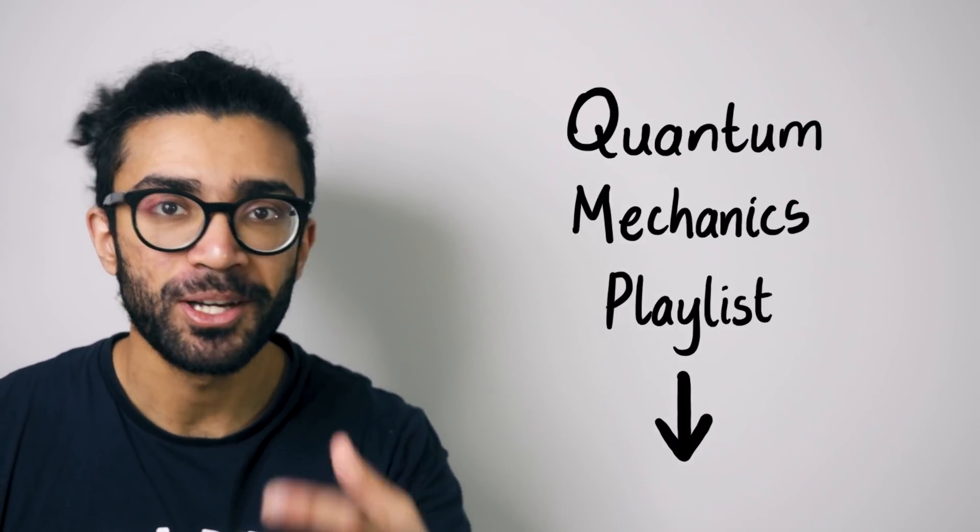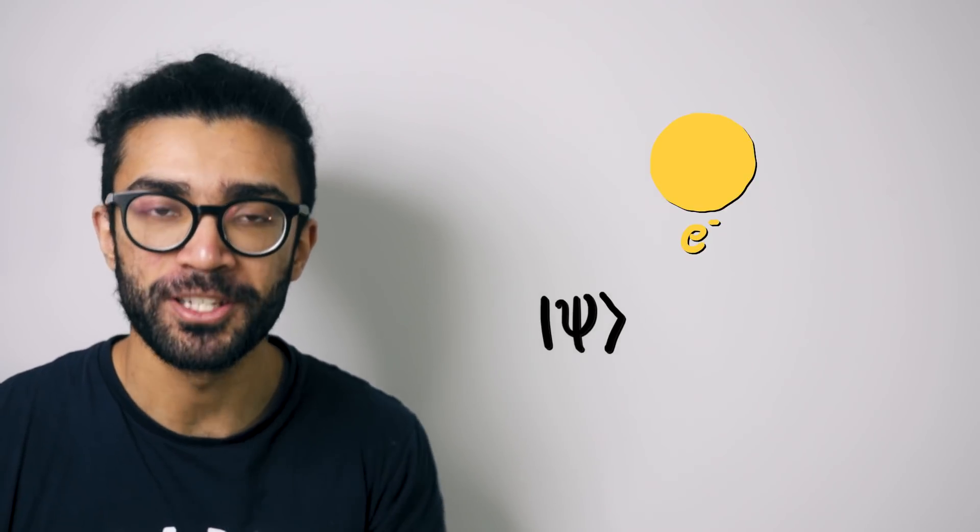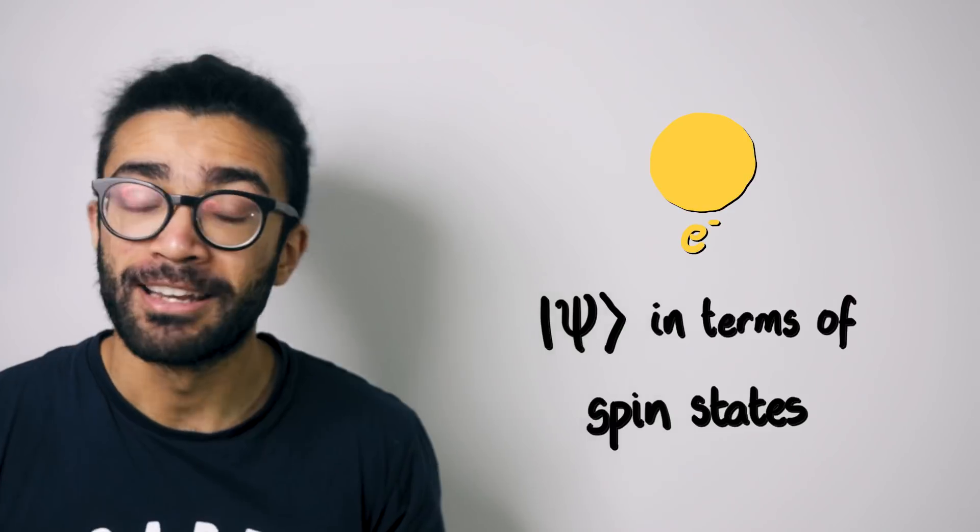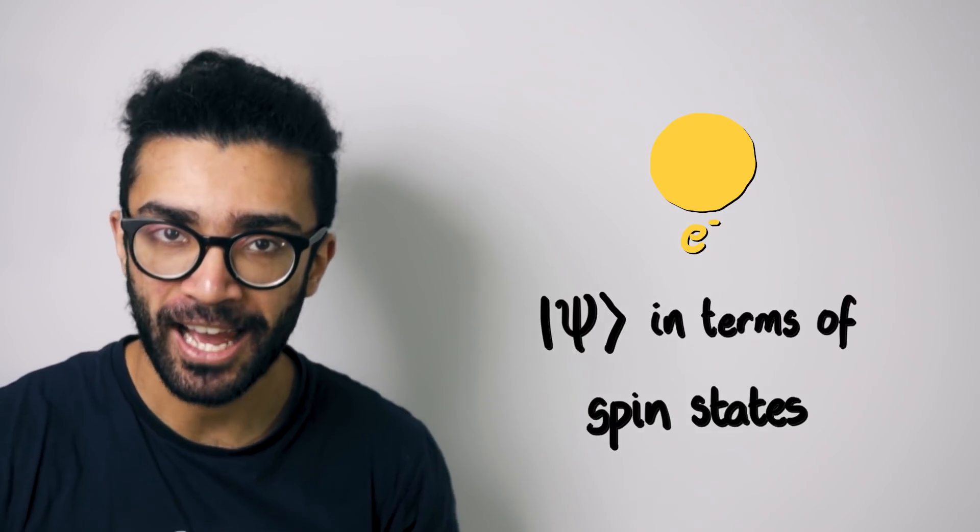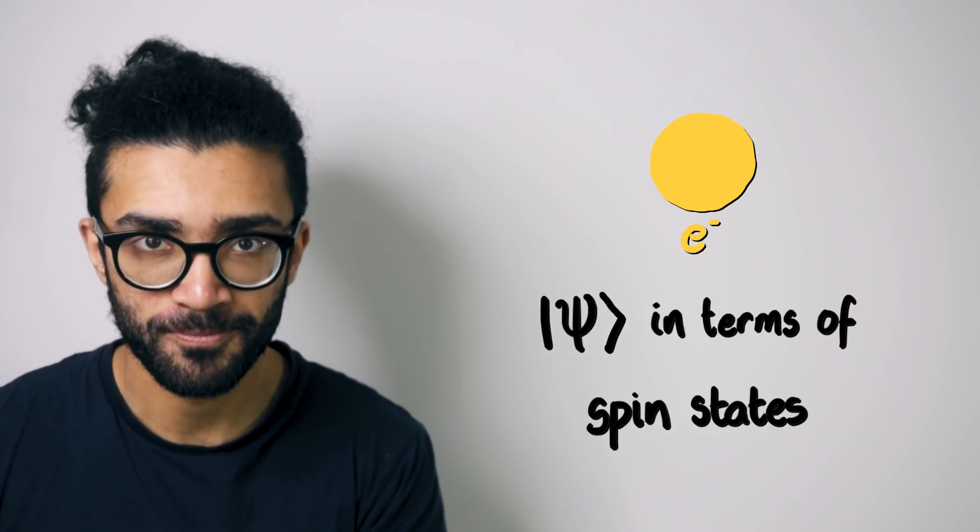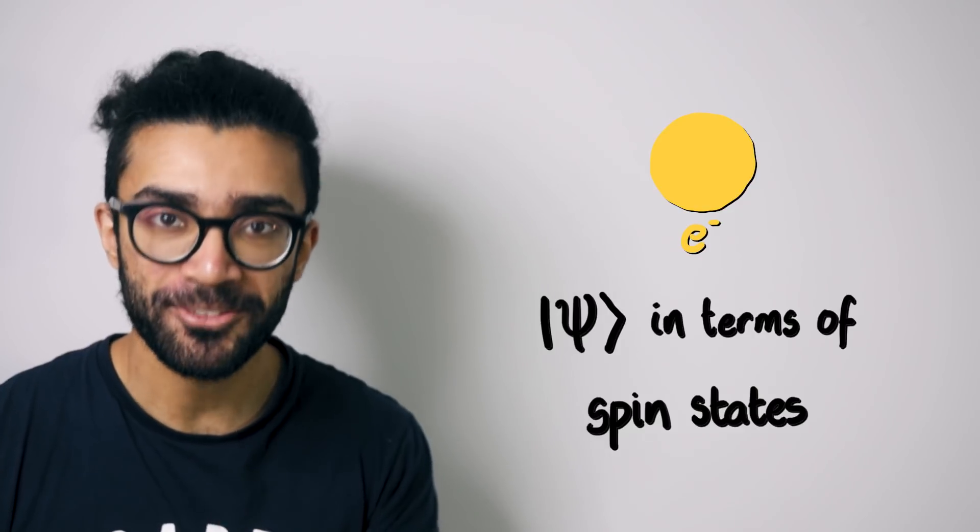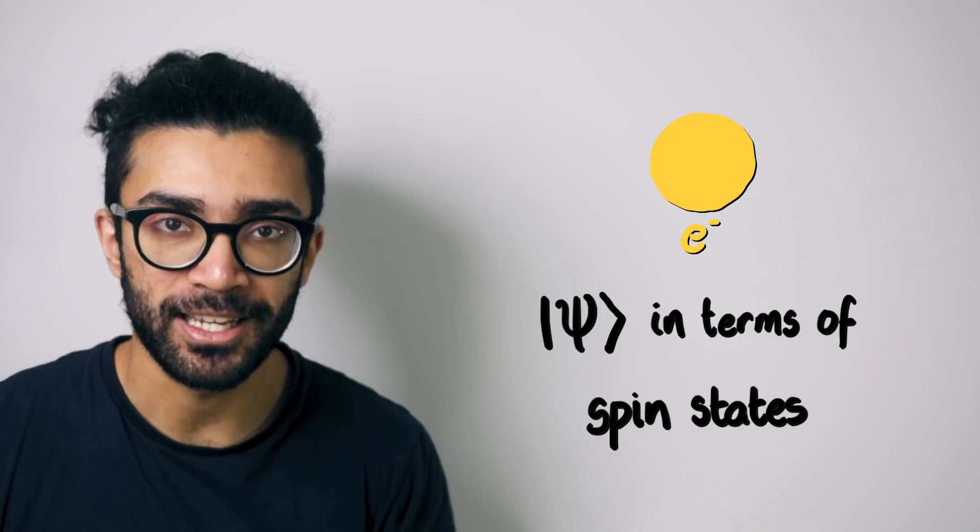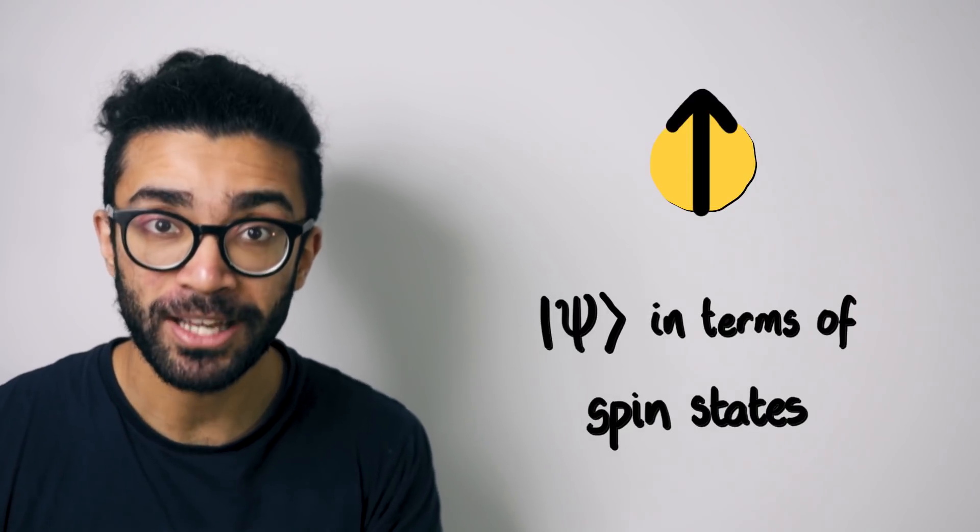But let's now imagine that we want to write our wave function for this single electron in terms of the spin states of this electron. Now spin is a property that electrons can have, just like mass or charge, but it's a rather more complicated and interesting property. An electron can be found in one of two spin states. These are usually called spin up and spin down.